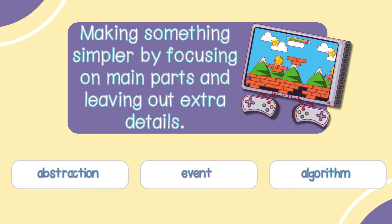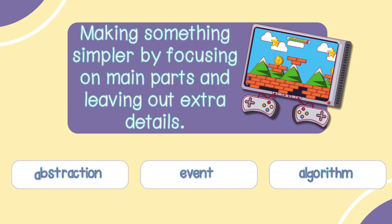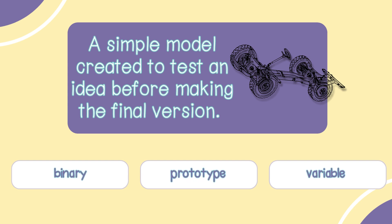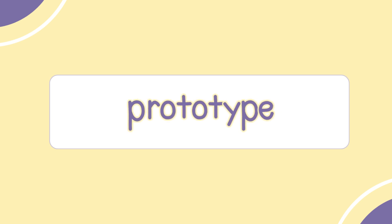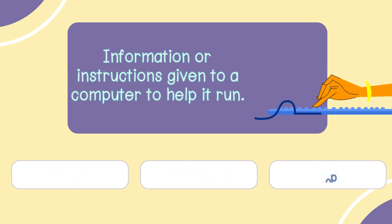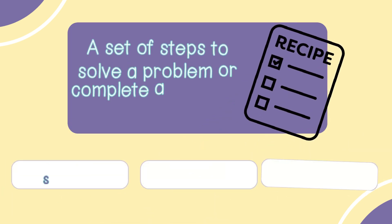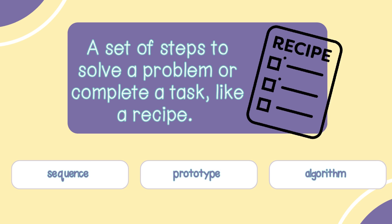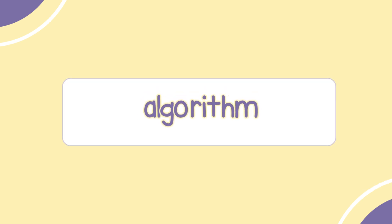Making something simpler by focusing on main parts and leaving out extra details — is that abstraction, event, or algorithm? The answer is abstraction. A simple model created to test an idea before making the final version — is that binary, prototype, or variable? The answer is prototype. Information or instructions given to a computer to help it run — is that input, abstraction, or loop? The answer is input. A set of steps to solve a problem or complete a task, like a recipe — is that sequence, prototype, or algorithm? The answer is algorithm.